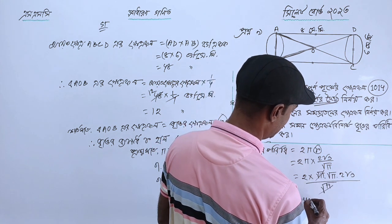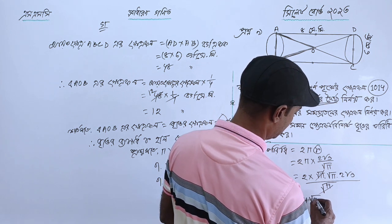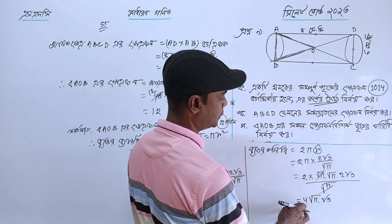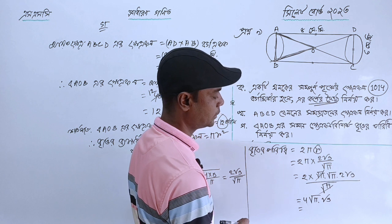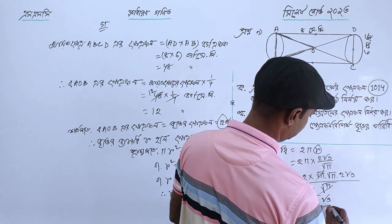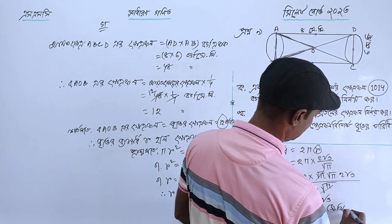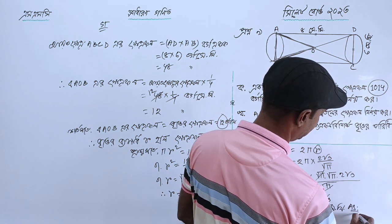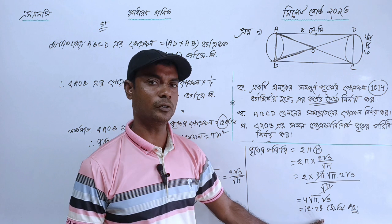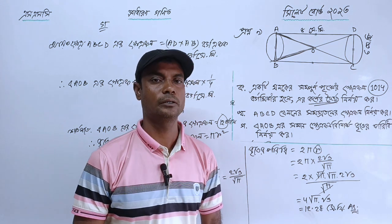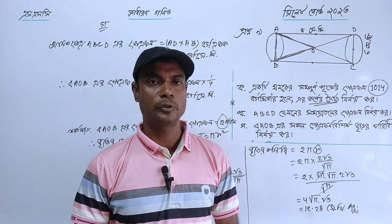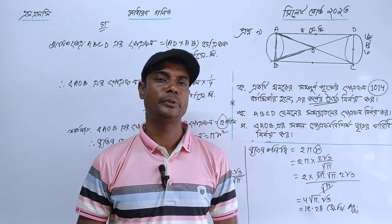4 root pi into root 3, so 4 into root pi × root 3 divided by root pi into root pi into root pi. Pi — so 1 divided by root pi, so 3 into — only 1 into root pi. I will see you in the next couple of weeks.